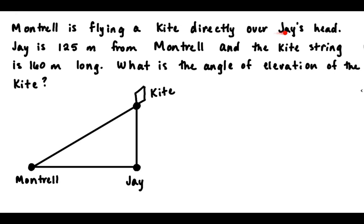So Montrell is flying a kite over Jay's head. Jay is 125 meters from Montrell. There's our first piece of numerical information. So which side of our triangle is the distance from Jay to Montrell? Well, here's Jay, here's Montrell. So there's the distance between them, right? So this side of our triangle is the 125.